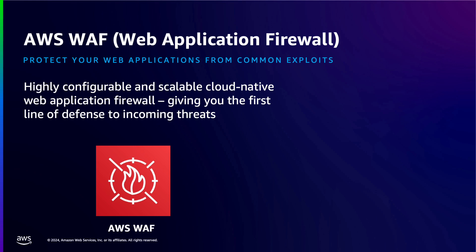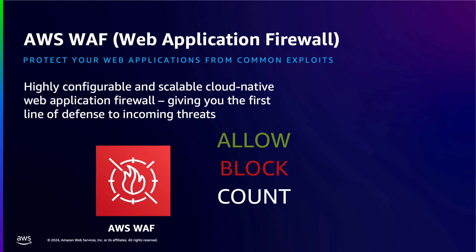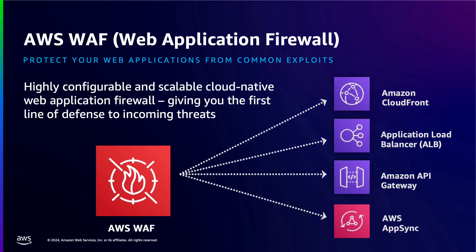AWS WAF is a highly configurable and scalable cloud-native web application firewall that helps protect web applications from application DDoS, web, and bot attacks by allowing you to configure rules that allow, block, or monitor web requests based on conditions that you define. AWS WAF can be deployed to protect resources such as Amazon CloudFront, application load balancers, Amazon API Gateway, as well as AWS AppSync.